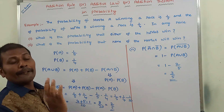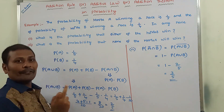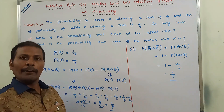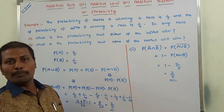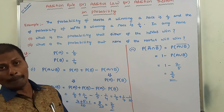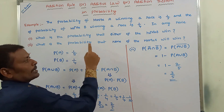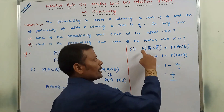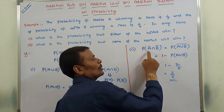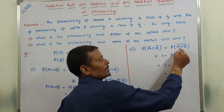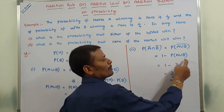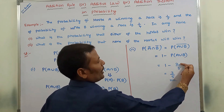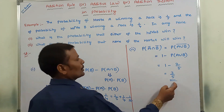To recap: P(A) denotes horse A winning, P(Ā) denotes horse A not winning, and P(B̄) denotes horse B not winning. The probability that none of the horses win is P(Ā ∩ B̄). By set theory, this equals the complement of P(A ∪ B), which is 1 − P(A ∪ B) = 1 − 2/5 = 3/5.